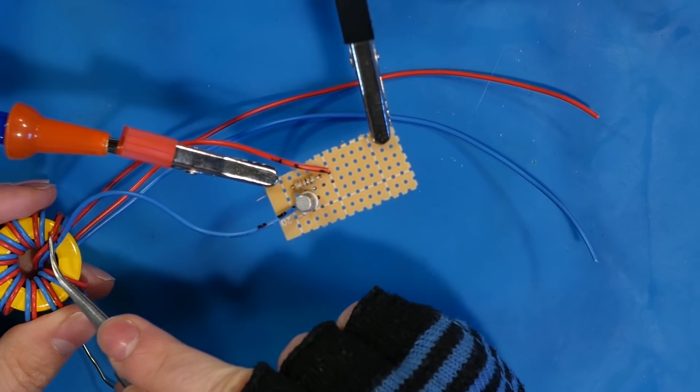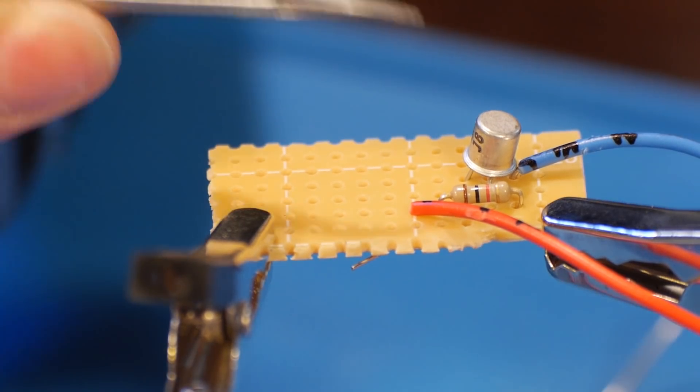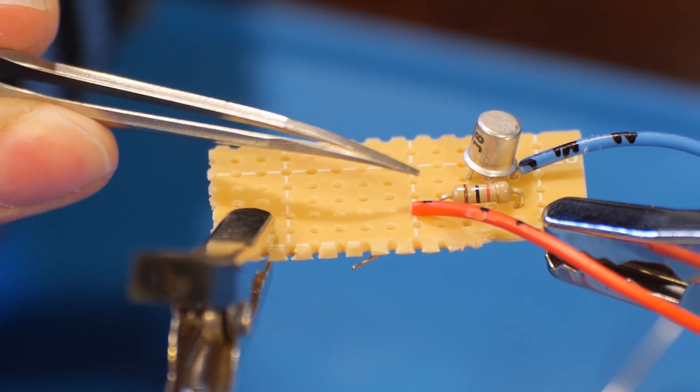Next, we'll connect the inner pair of wires of our toroid. The blue will go to the base of the transistor, and the red will go above the resistor.